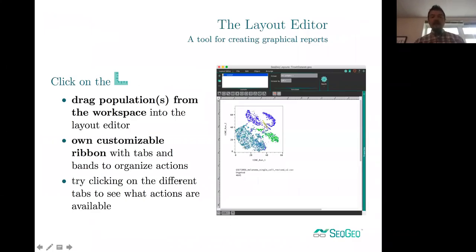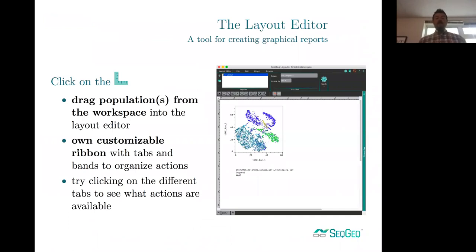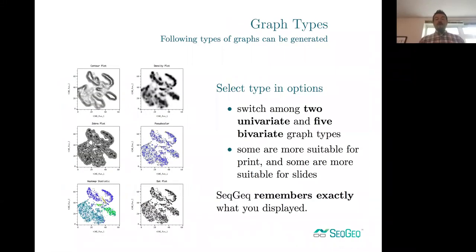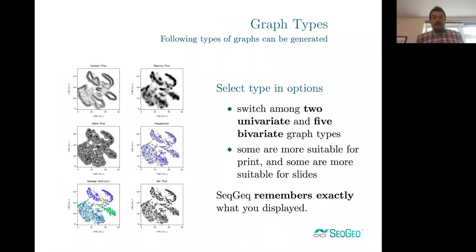Ways of exporting information from SeatGeek: the layout editor is a convenient way to view different plots side by side. Just as you set up graphs in the graph window, drag populations into the layout editor to visualize them in a handy format and export publication-quality graphics. You can also change graph types within the layout editor — contour plots, density plots, zebra plots, and a whole variety of other plotting options.